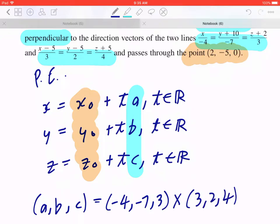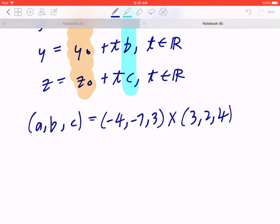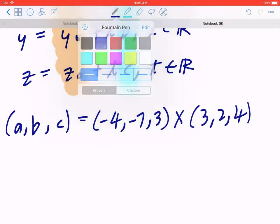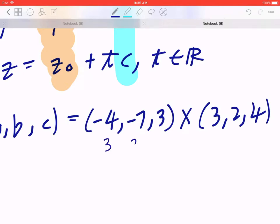So again, if you go back to the basic concepts of cross products, you can write down 3, 2, 4 underneath, line them up, and start crossing it. This equals to, if you think about the three components, in the first case it's going to be (-7)(4) - (2)(3).